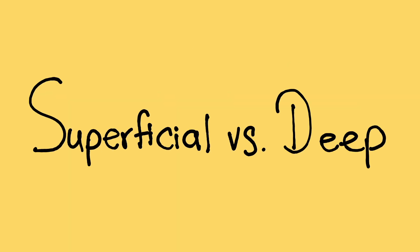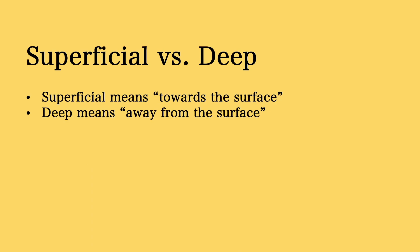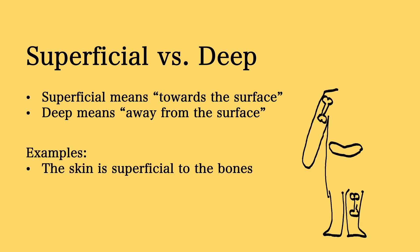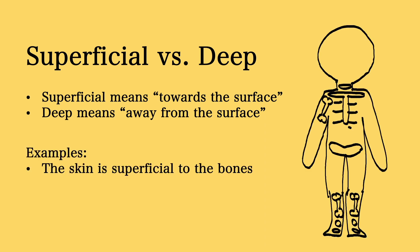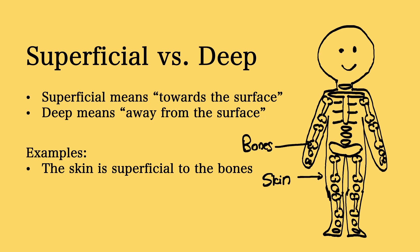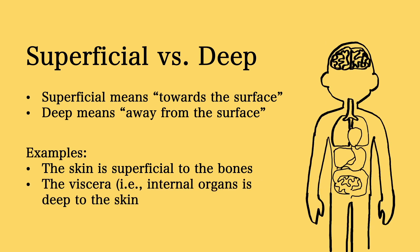Next, we have superficial and deep. Superficial means towards the surface and deep means away from the surface. For example, the skin is superficial to the bones, or another way to see this is that the bones are deeper than the skin. Another example is that the viscera — the internal organs of the body — are deeper than the skin, meaning the skin is superficial to the viscera of the body.